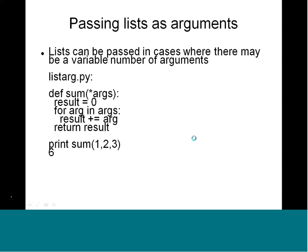How do we pass lists as arguments? A list can be passed in cases where there may be a variable number of arguments — this is something we saw in Tcl as well. Here in list_r.py we define a function called 'sum' and the arguments are denoted with a star (*args). The result starts at 0, then for each arg in args we add to result, and then return result.